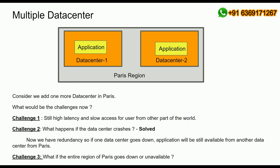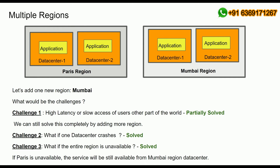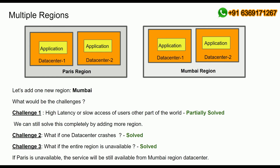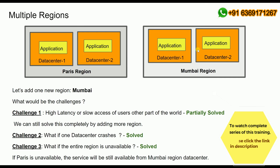In order to make our application available, we can deploy it in multiple regions. Previously, we discussed deploying in multiple data centers within one region, but there is a chance the entire region may go down. To overcome this, we can deploy our application in other regions as well. For example, we already have two data centers at the Paris region, and we add a new region — Mumbai, India — where the application is also deployed across two data centers.